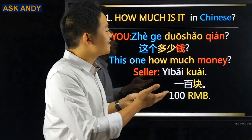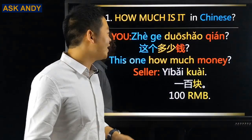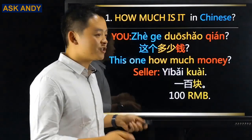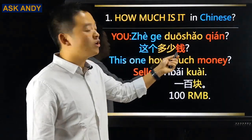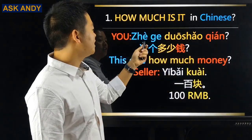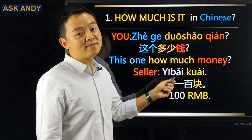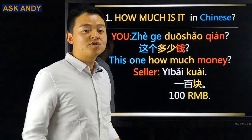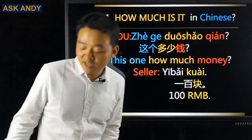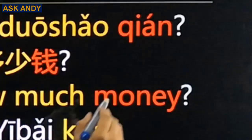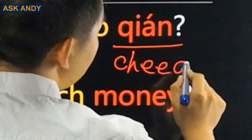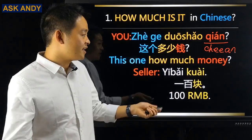Question number one: how much is it in Chinese? We can say that in an easy way, because you don't really need to say the name of the thing you want to ask about. You just point to something and ask: 这个多少钱? So 这个 means 'this one,' 多少 is 'how much,' and 钱 is 'money.' For the pronunciation of 钱, you can rewrite it as C-H-E-E-A-N.